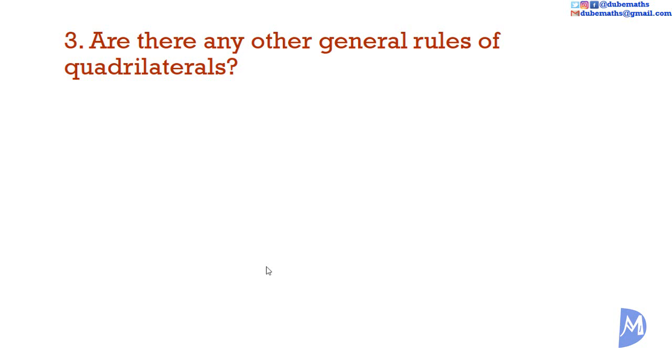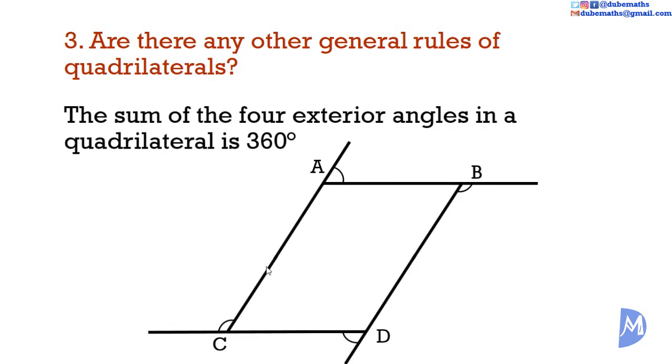Question 3. Are there any other general rules of quadrilaterals? Yes. The sum of the four exterior angles in a quadrilateral is 360 degrees.